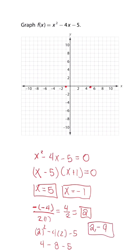When we go on our graph and plot that point, it's going to be right here. If we want an extra point, we could plot the y-intercept. If we make x equal to 0, the y-intercept is going to be negative 5. Now we have 3 to 4 points — we can connect them and draw the parabola to represent the equation.